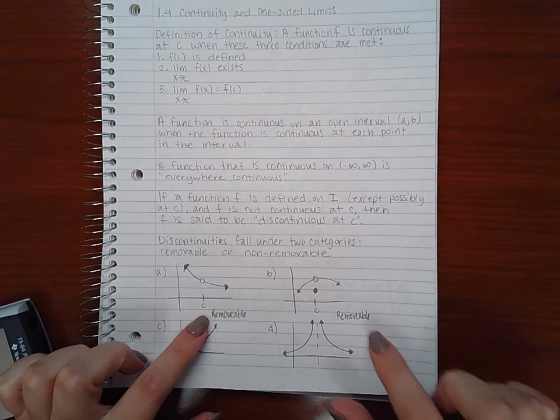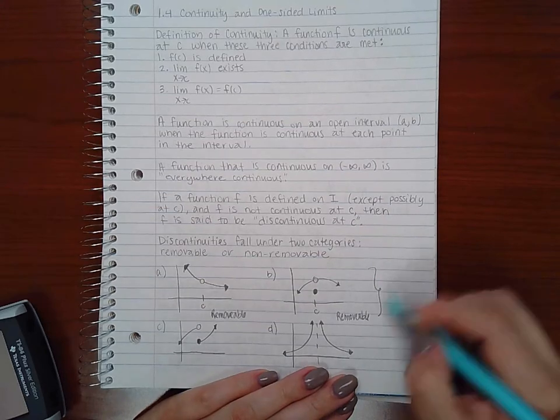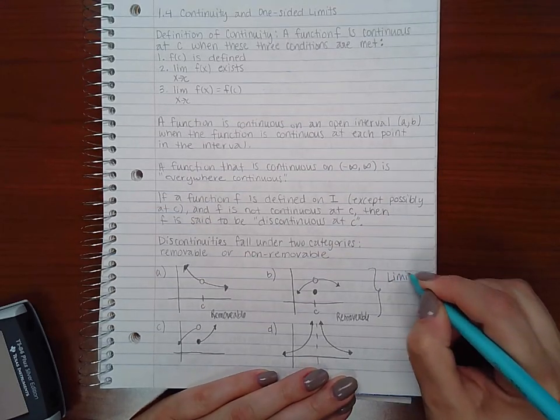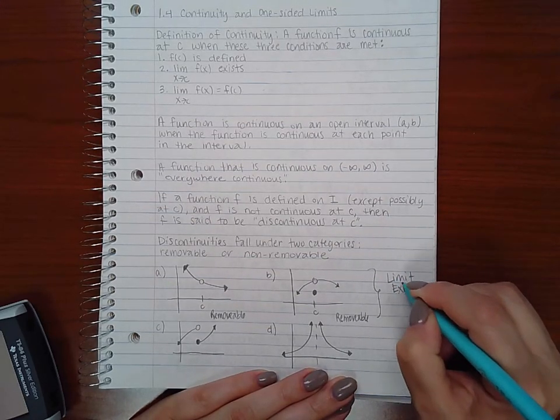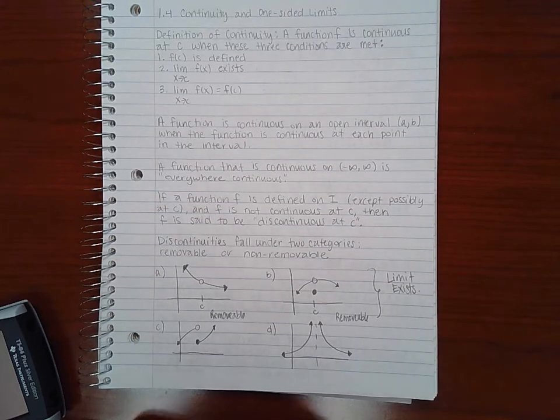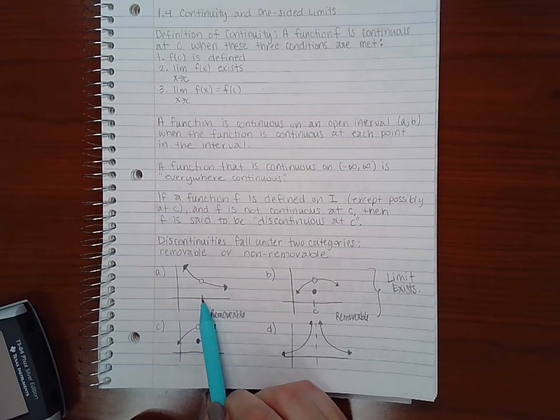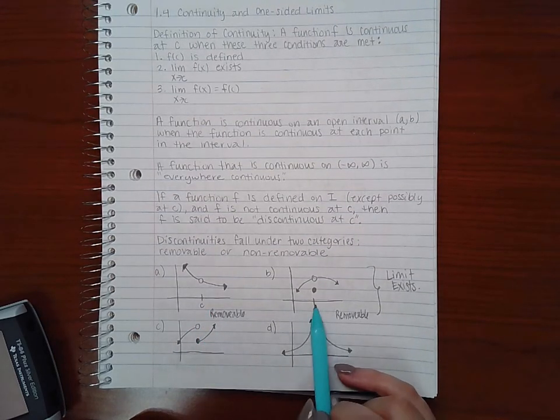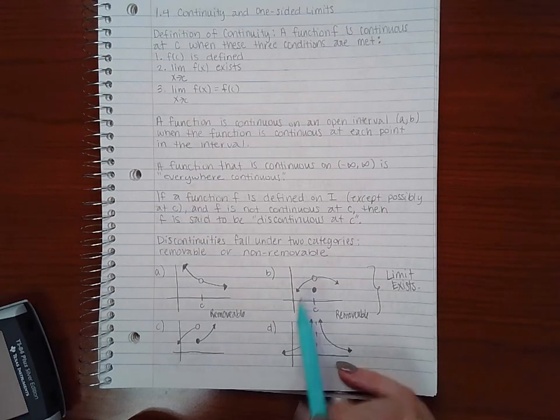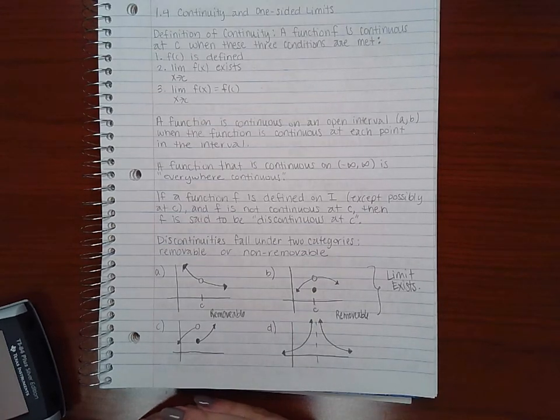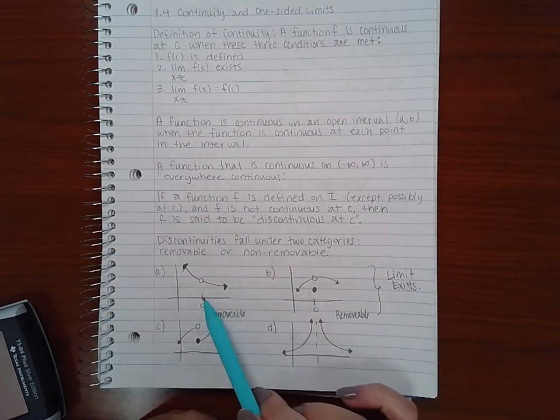And in both of these two cases, a and b, the limit exists. It's just here there's no value at c, and here there is a value at c, but it's not consistent with what you would get for the limit. So for this case,